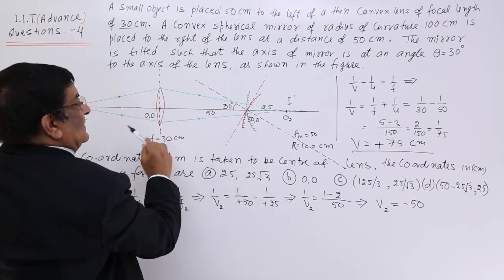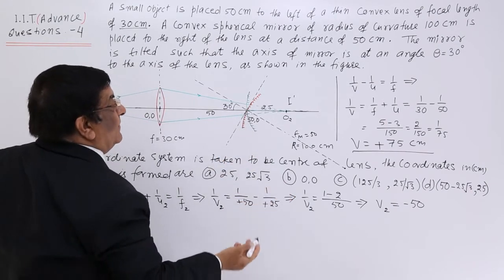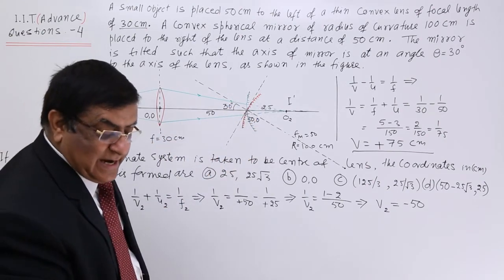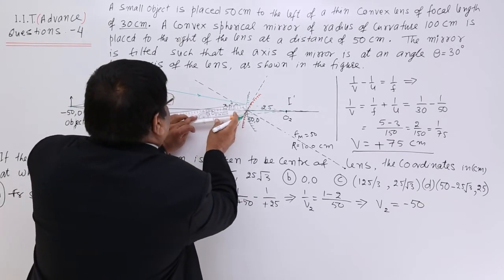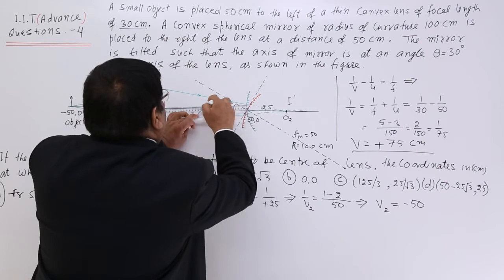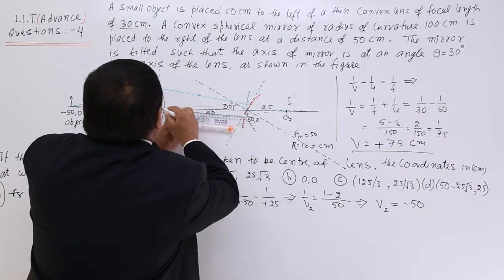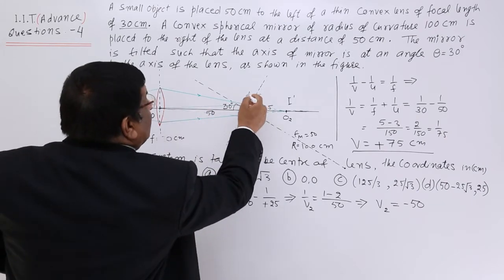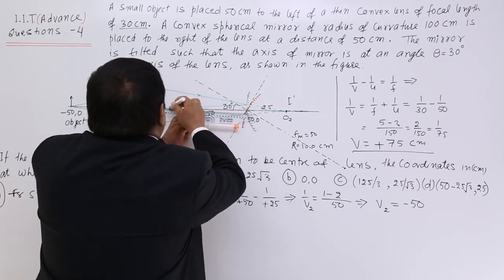The image v₂ is minus 50 from the pole of the mirror, meaning it is 50 centimeters behind the mirror. But the mirror itself is already at 50 centimeters from the lens, so if the mirror were straight, the reflected image would return and meet right at the lens position — at the origin on the principal axis.